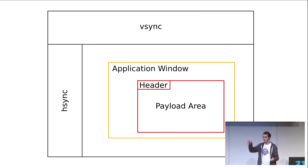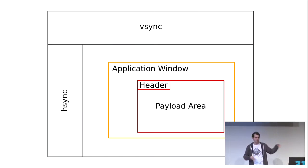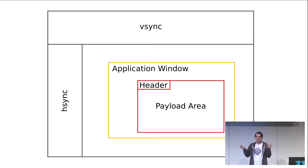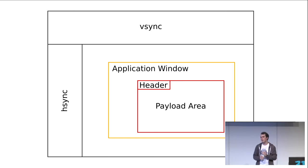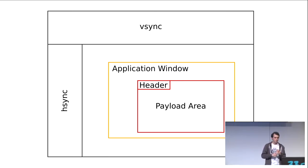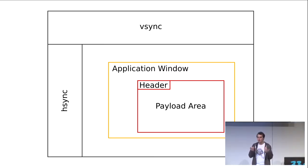You have the vertical sync and horizontal sync signals — framing information stemming from back when VGA was a thing — and then the actual content area where most of the time you have some kind of desktop environment running, and then an application window inside that desktop which may contain something worth protecting. As an example, think of Thunderbird where I want to send or receive an encrypted email.